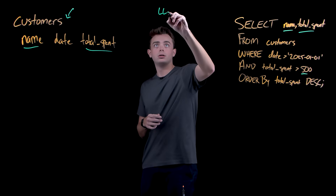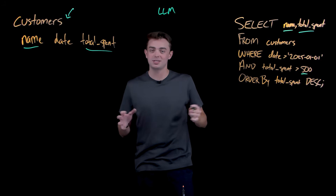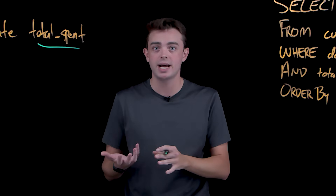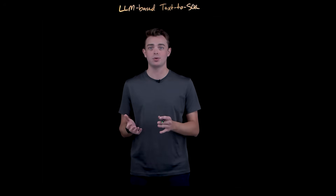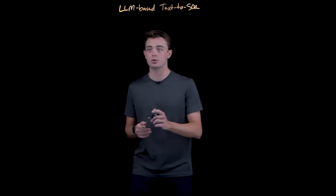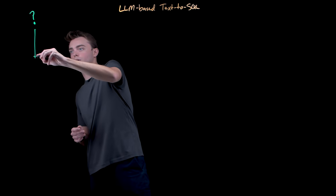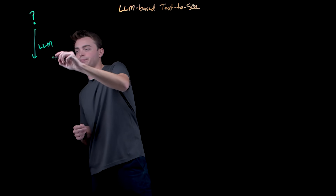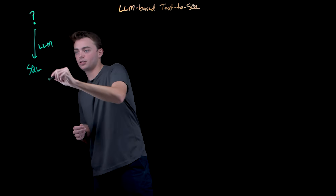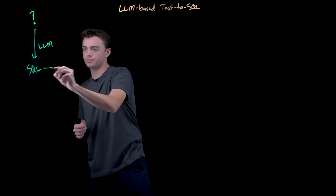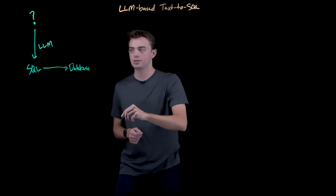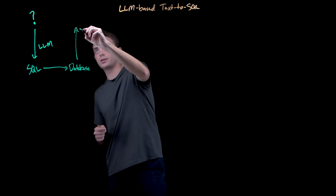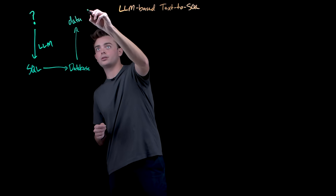But large language models — the same AI technology we're seeing power generation tasks and other use cases — have completely changed this equation. LLM-based text-to-SQL is the process of taking a user's natural language question, running it through an LLM, generating a SQL query, and then executing that query on a database, ultimately resulting in data coming back to the user.